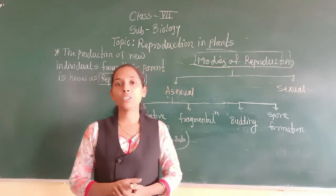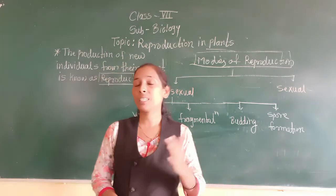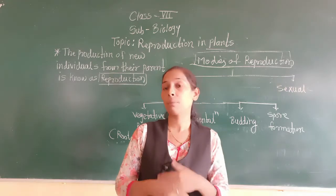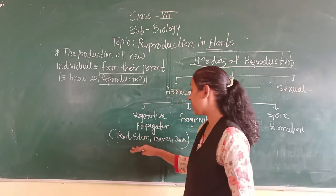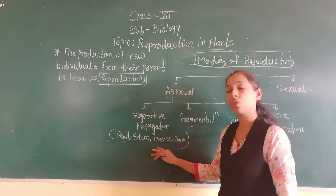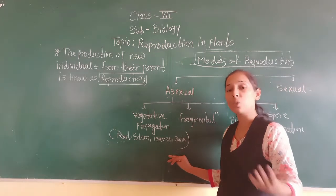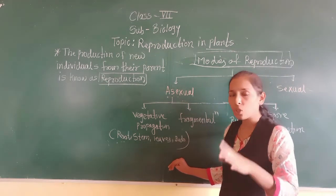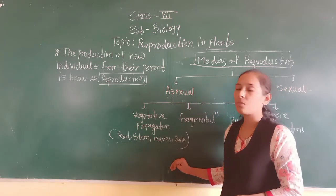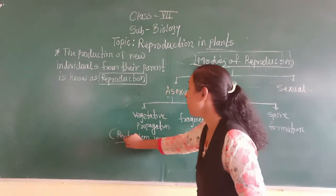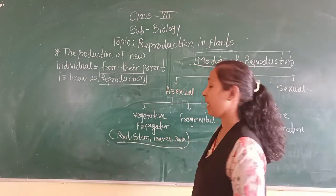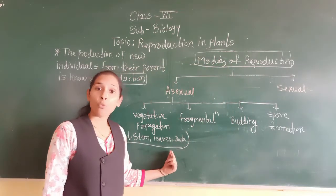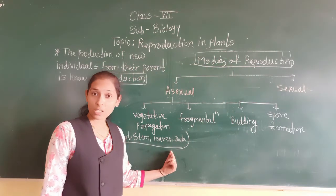Before that, in your last standard or in the sixth standard you have discussed about the parts of the plant — you have discussed about the stem, roots, seeds, leaves. Also you have discussed about the buds and nodes which are present on the stem. So all these are the parts of the plants which are called vegetative parts of the plant.